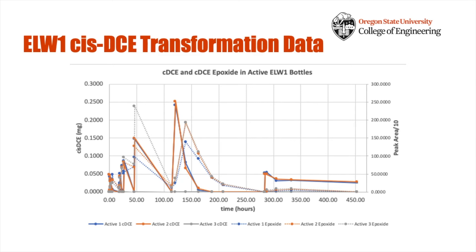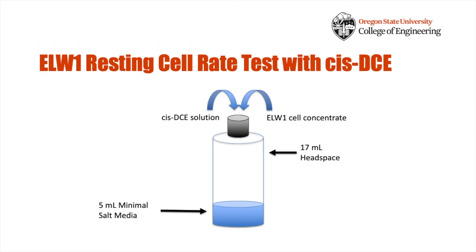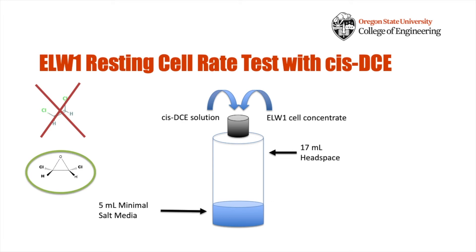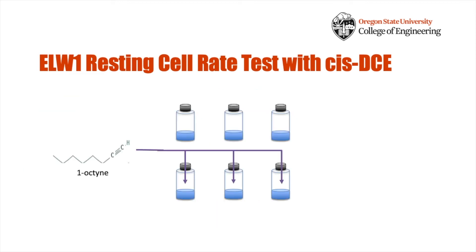The epoxide data corresponds to the secondary y-axis of peak area divided by 10. Since we can now measure the CIS-DCE epoxide in the bottles, we can investigate whether its disappearance is also due to ELW1's enzymatic activity. The experiment to test this was set up very similarly to the previous one, but here I'm looking for the accumulation of the CIS-DCE epoxide. Once significant accumulation of CIS-DCE epoxide was achieved, a monooxygenase inhibitor, 1-octyne, was added to half of the bottles. In those bottles, whatever transformation occurs is not due to monooxygenase activity. I could then follow the CIS-DCE epoxide in both active and inhibited bottles to see if the epoxide disappearance occurred at different rates.